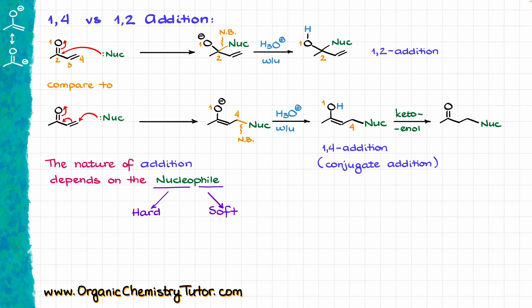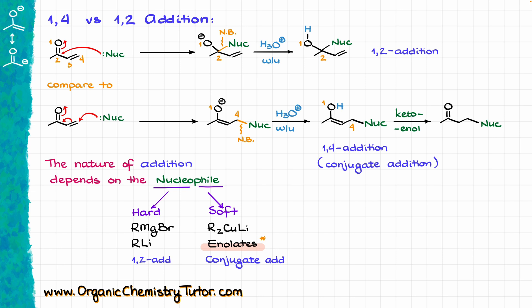When it comes to hard nucleophiles, we are typically going to be seeing species like R-magnesium-bromide — organomagnesium compounds, aka Grignard reagents — or organolithium compounds. When it comes to soft nucleophiles, the common examples are going to be something like organocuprates like Gilman reagents, or enolates. Hard nucleophiles tend to go for the 1,2-addition or direct addition onto your carbonyl, while soft nucleophiles will typically go for the conjugate addition or 1,4-addition.